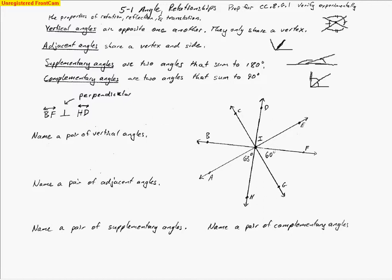Now they want us to name some vertical angles. Vertical angles are ones that are opposite one another — they share a vertex, but you've got to look at the line going all the way down. I'm going to look at angle CIB, and that one is going to be vertical to angle GIF. Notice they both have I in the center, because that's the common vertex. That's just one set.